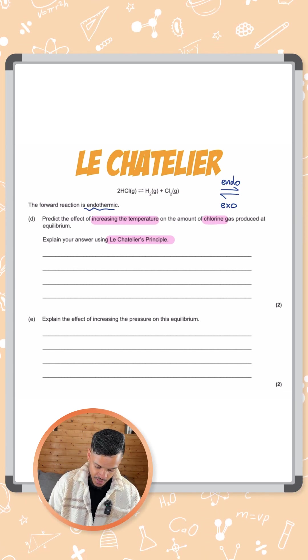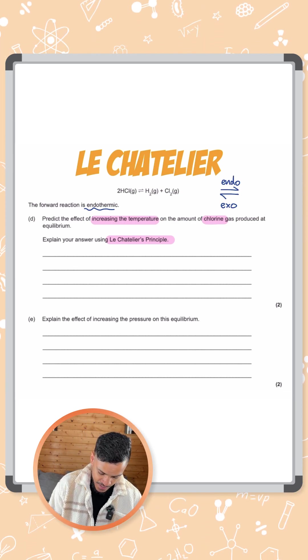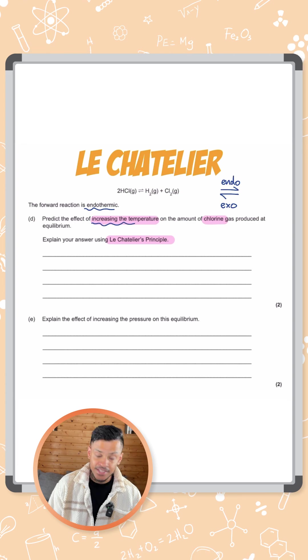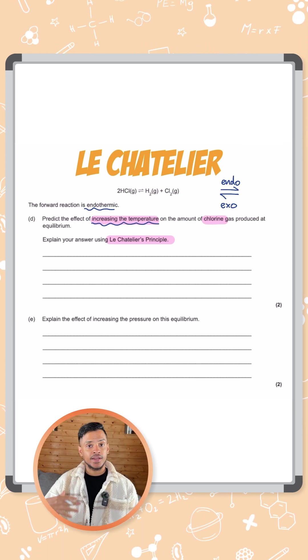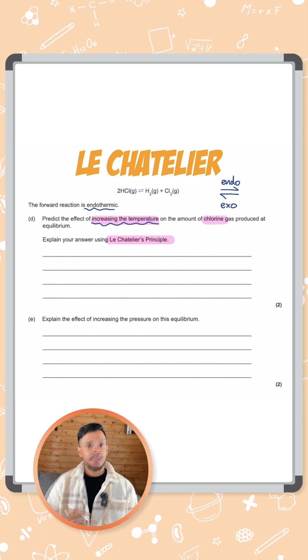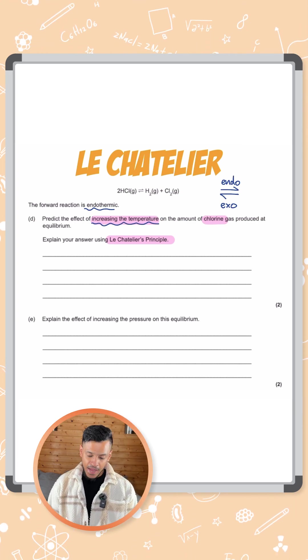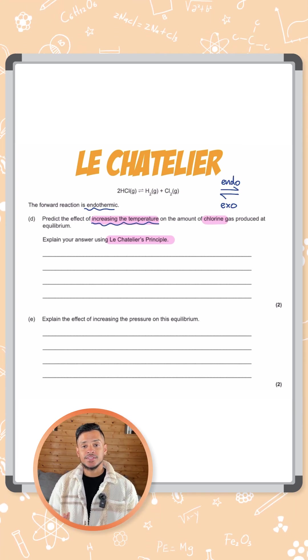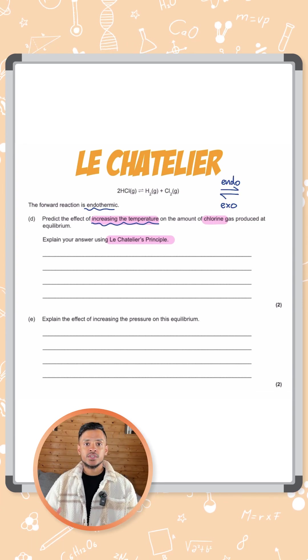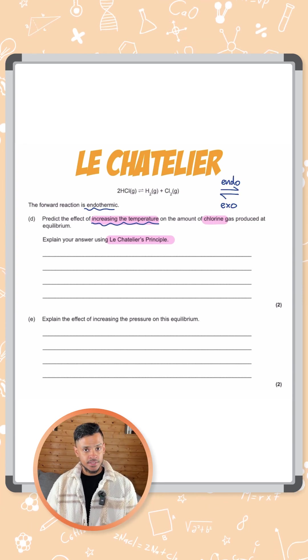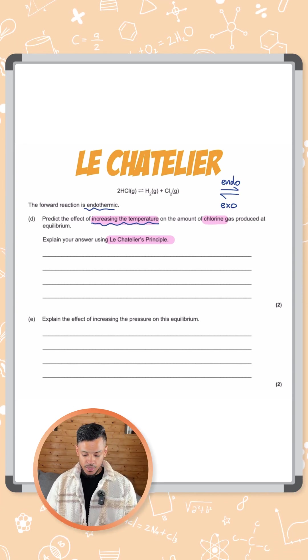So if you're increasing the temperature, the system is going to try to counteract that increase. How can it decrease the temperature? It's going to go to the side which decreases temperature.